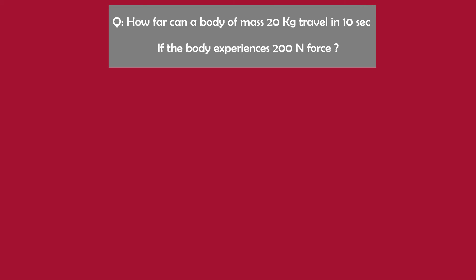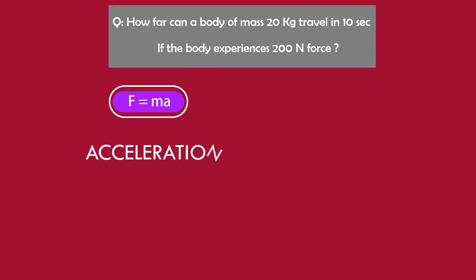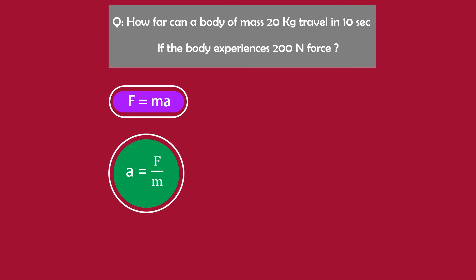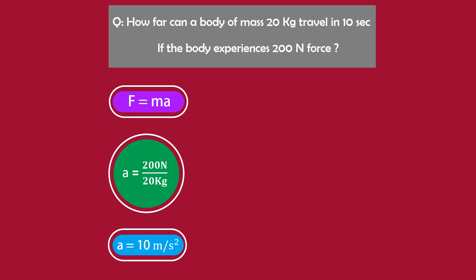Hence, again using Newton's second law, F is equal to ma. Here we need acceleration to be calculated, therefore a is equal to F divided by m. Now we put the values in this equation: a is equal to 200 newton divided by 20 kg. As a result we get 10 meter per second square acceleration. So 200 newton force will create 10 meter per second square acceleration in a body of mass 20 kg.